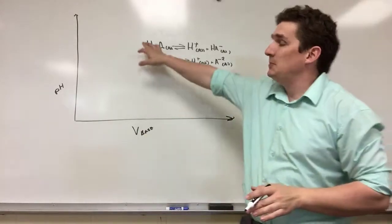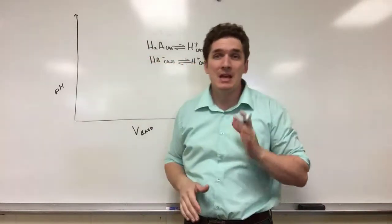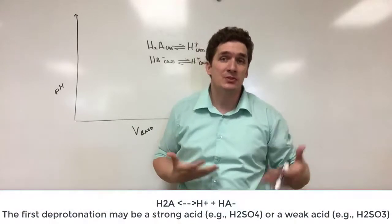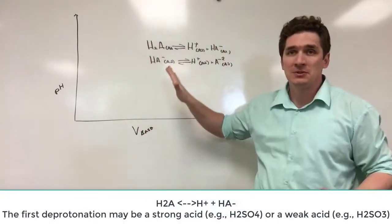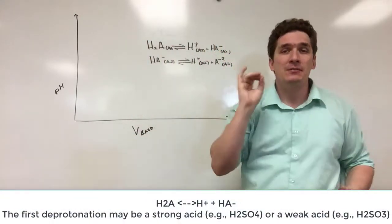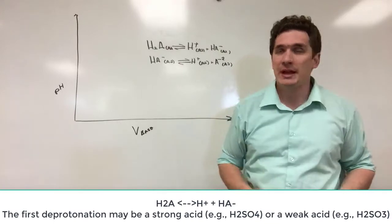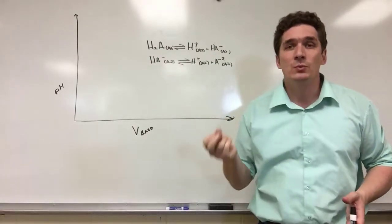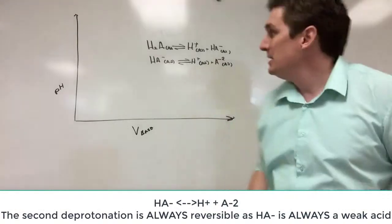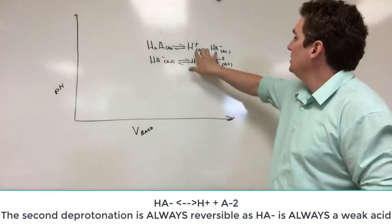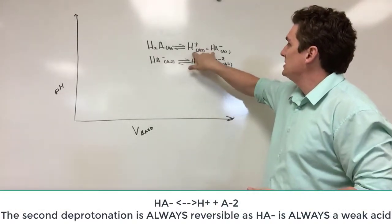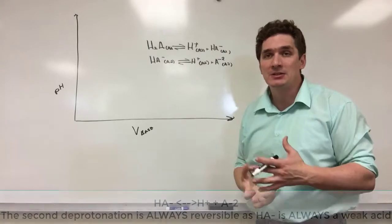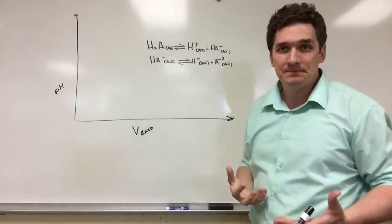Now the first deprotonation may be a strong acid. An example is H2SO4 — that's a strong acid, so it has an irreversible first step. But for every single diprotic acid, the second deprotonation is always a weak acid. The reason is that up here we just have a +1 and -1 charge, but for the second deprotonation we have +1 and -2. They're much more strongly attracted to each other, so it's hard to pull them apart.